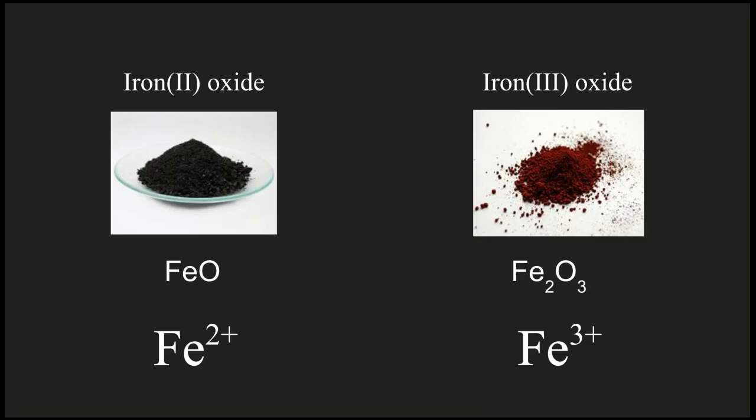One common mistake students tend to make when writing the formulas for compounds where you can have more than one possible charge and where you're using the Roman numerals is they tend to forget that this is the charge. This number does not tell you anything other than the charge. The mistake students often make is they think it tells them something about how many they have.